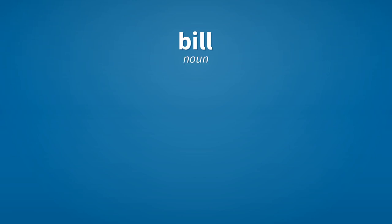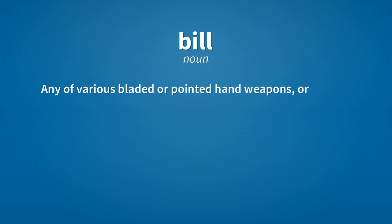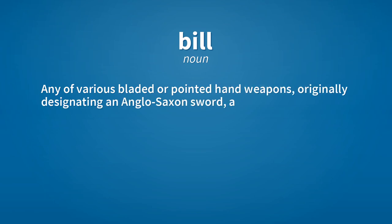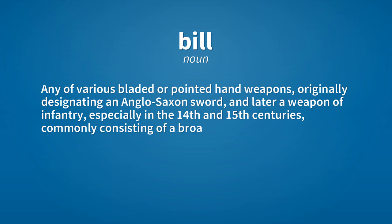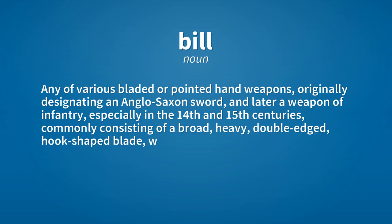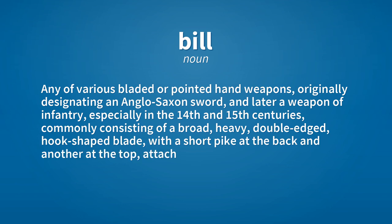Bill. Noun. Any of various bladed or pointed hand weapons, originally designating an Anglo-Saxon sword, and later a weapon of infantry, especially in the 14th and 15th centuries, commonly consisting of a broad, heavy, double-edged, hook-shaped blade, with a short pike at the back and another at the top, attached to the end of a long staff.